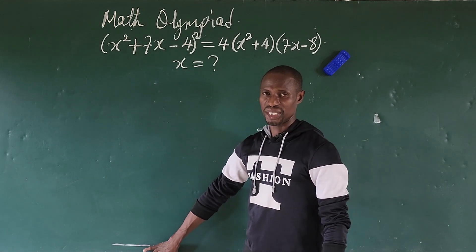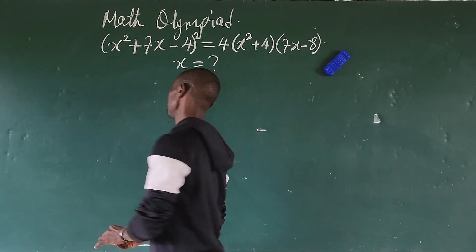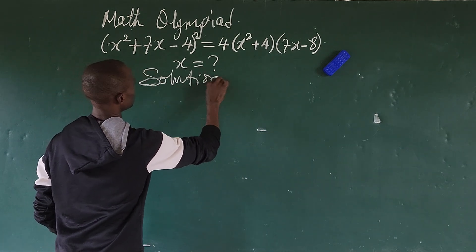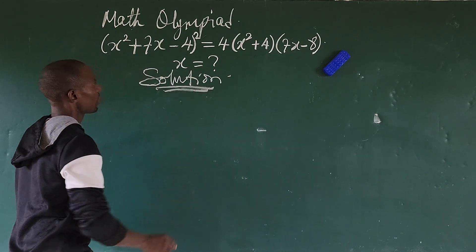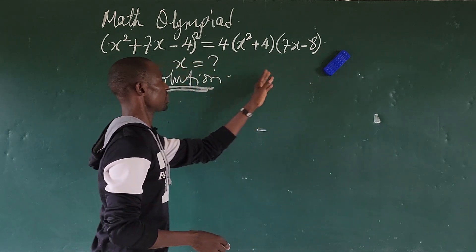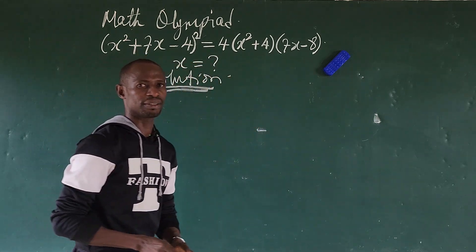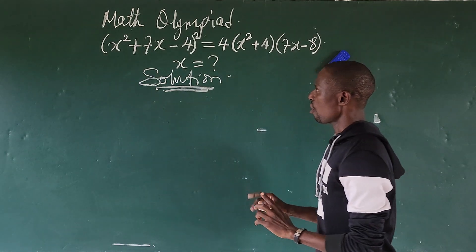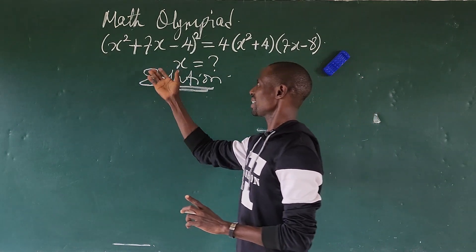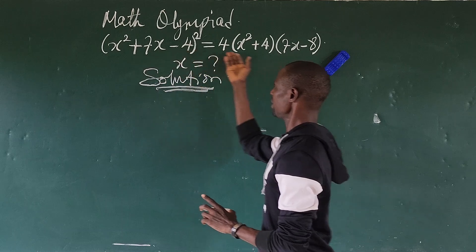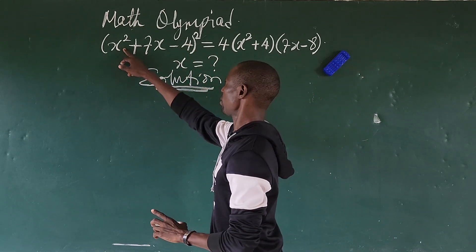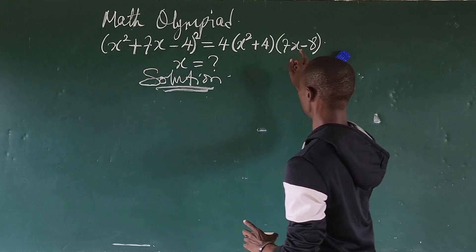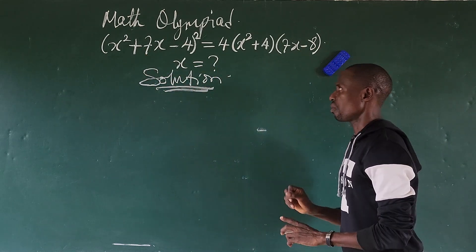Without much waste of time, let's go into today's challenge. Take a look at the right-hand side of the equation and look at the left-hand side. You can see some similarity in there. We have x² here and x² here; we have 7x here and 7x there. All we have to do is try to write the left side in a matching form.